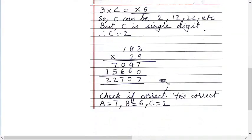So what we get the number is 783 into 29 equals 2. Means this straight line 7049 plus here 15660 and 22707. Now this is what we get by inputting the values.